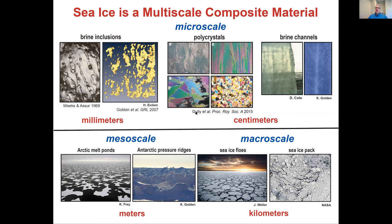Sea ice is a complex multi-scale material with composite structure varying over about 10 orders of magnitude. At the smallest scale, brine inclusions form within sea ice as it freezes, creating a polycrystalline structure. These tiny brine inclusions can form much larger connected structures through which fluid can flow. Moving up in scale, we see the beautiful geometry of Arctic melt ponds, Antarctic pressure ridges, and the ice pack itself—a composite of ice floes in a fluid ocean host.